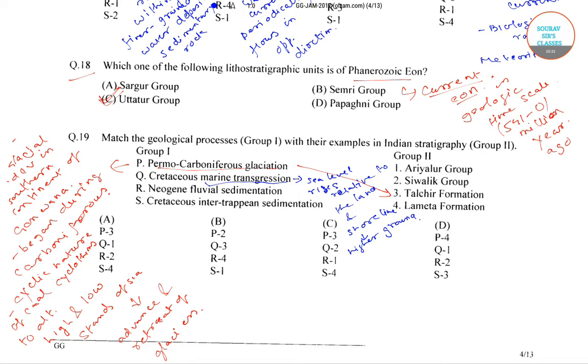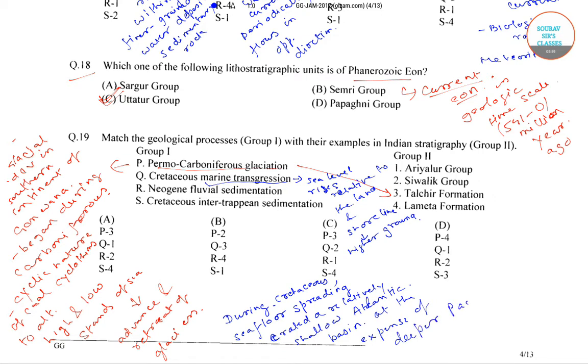During the Cretaceous, sea floor spreading created a relatively shallow Atlantic basin at the expense of deeper Pacific Basin. One of the examples of Cretaceous Marine Transgression is Areolar Group. So it is P3Q1.